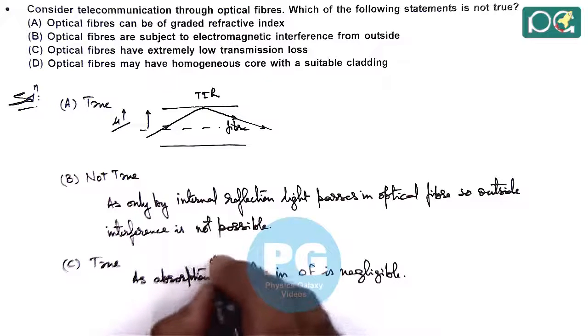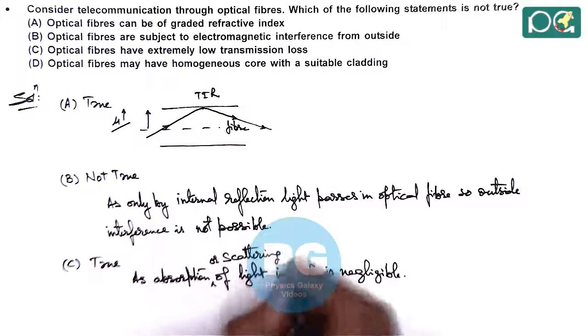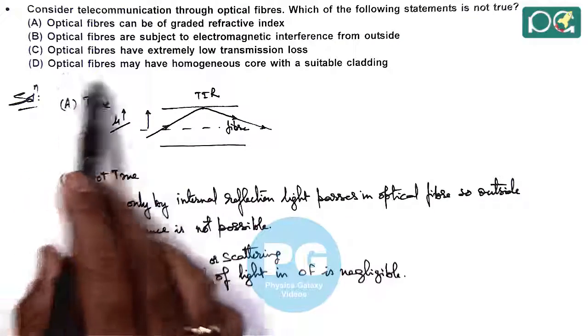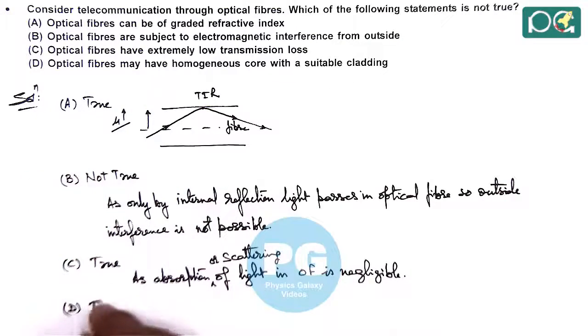Absorption, or we can write, or scattering of light in optical fiber is negligible. So losses are also very low. Option D says optical fiber may have homogenous core with a suitable cladding. That's also true.